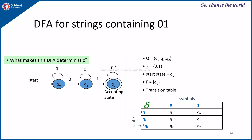What makes this DFA deterministic? For every state on every input symbol, you have a single next state — that is why we call it deterministic. What if the language allows the empty string? If the language allows the empty string, then the start state itself will become the final state.